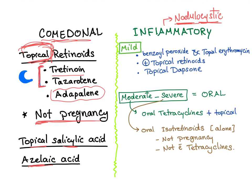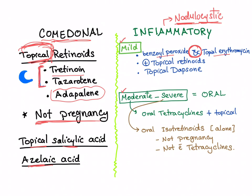For inflammatory acne, treatment depends on severity. For mild cases, we use topical agents: benzoyl peroxide combined with topical erythromycin. This combination decreases the resistance of Propionibacterium acnes. Topical retinoids can be added as adjuvant therapy, or topical dapsone can be used.